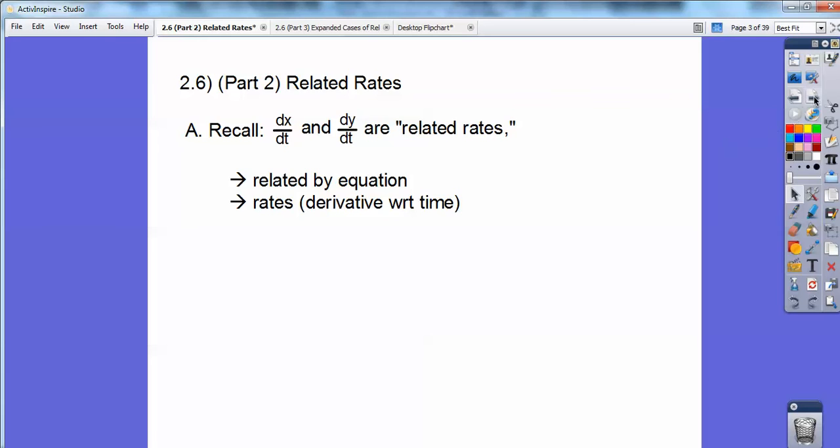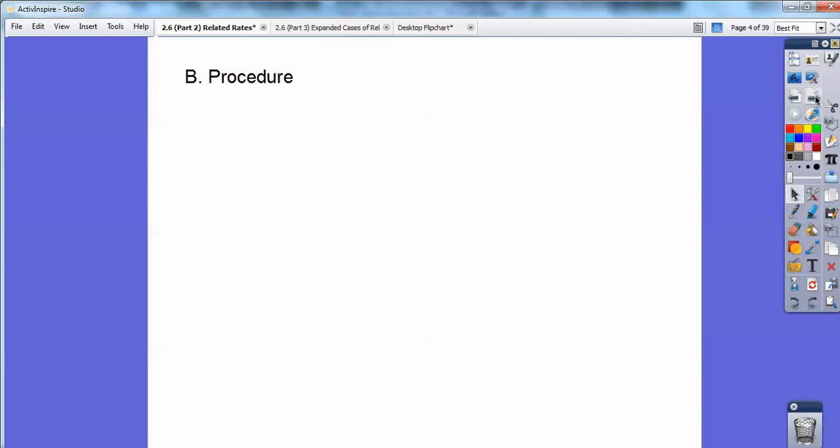They're related rates with respect to time. So this says related, their derivatives with respect to time. So instead of dy dx, they're dy dt's and dx dt's and everything else.